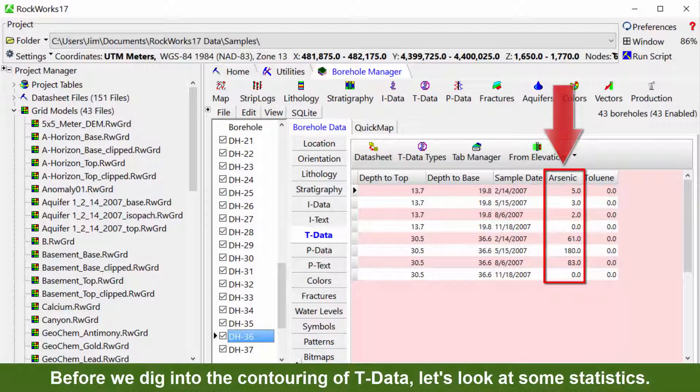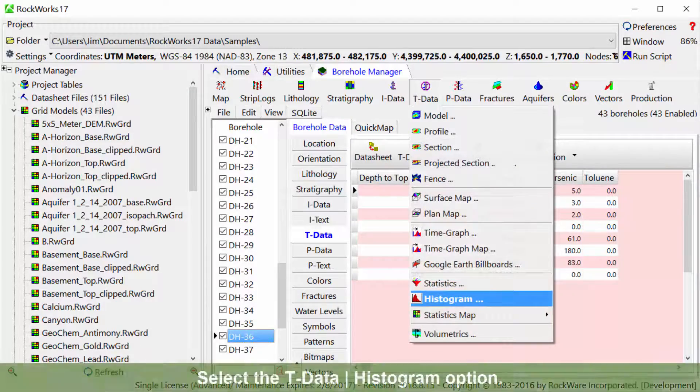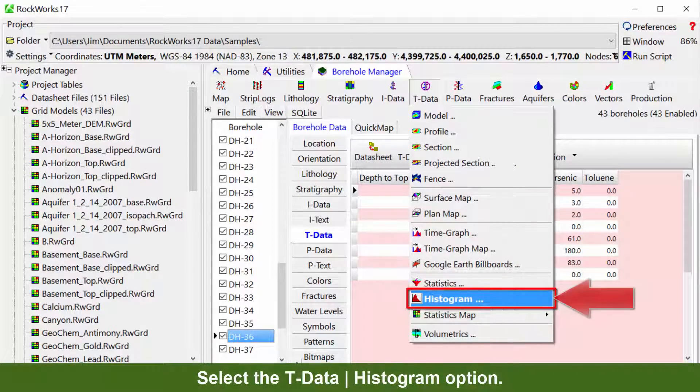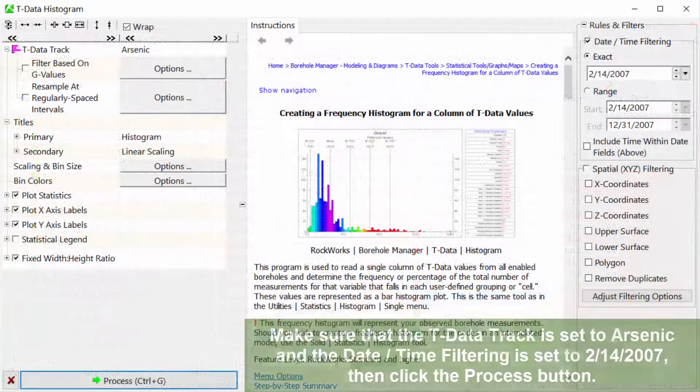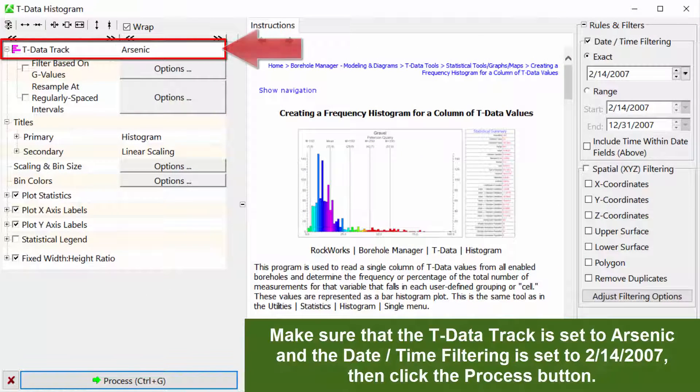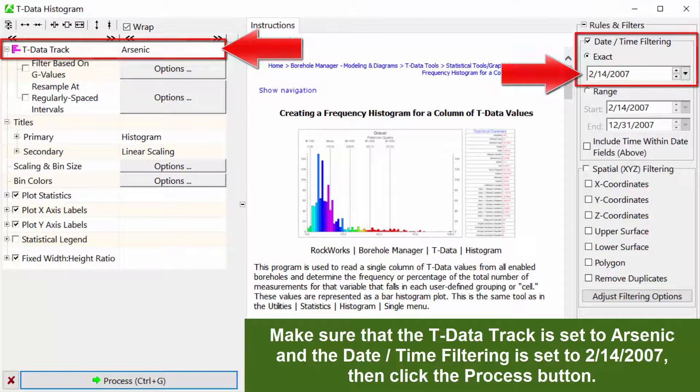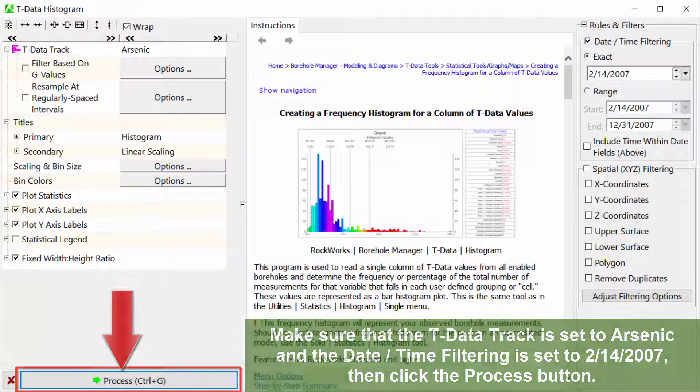Before we dig into the contouring of T-Data, let's look at some statistics. Select the T-Data Histogram option. Make sure that the T-Data track is set to Arsenic and the Date-Time filtering is set to 2-14-07, then click the Process button.